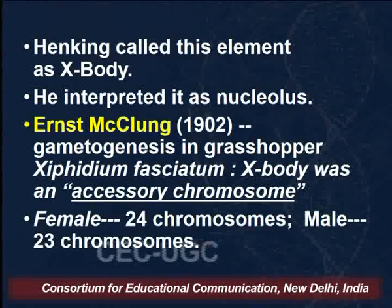This unpaired element seemed to be extra, and Henking called it the X-body. His basic idea was that it was something extra, though he went a little astray in its interpretation — he thought the X-body was in fact a nucleolus, which was eventually found to be erroneous. It was only after the work of Ernst McClung, studying gametogenesis in the grasshopper Xiphidium fasciatum, that the X-body was found to be an additional chromosome, which he called an accessory chromosome. In this grasshopper, the female has 24 chromosomes and the male has 23.